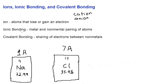In ionic bonding, what's going to happen is that you're going to have a metal and a non-metal, and these two atoms are going to come together and become a compound. In covalent bonding, you're going to have atoms that are sharing the electrons, and this occurs between non-metals. Covalent bonding is only between non-metals, whereas ionic bonding is between a metal and a non-metal.